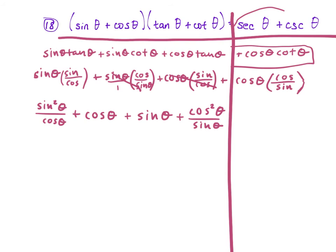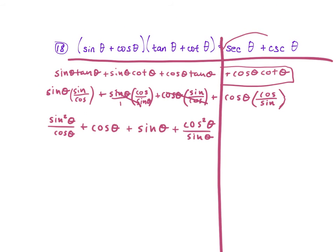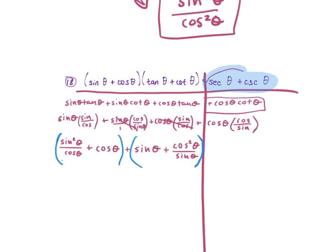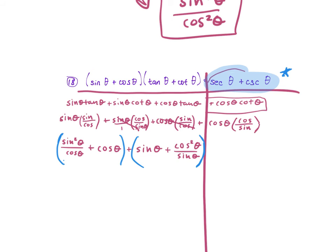We want to combine these into two terms to match secant θ plus cosecant θ. Group the first two terms together and the last two together. Find a common denominator within each group and combine them — don't try to combine all four at once.